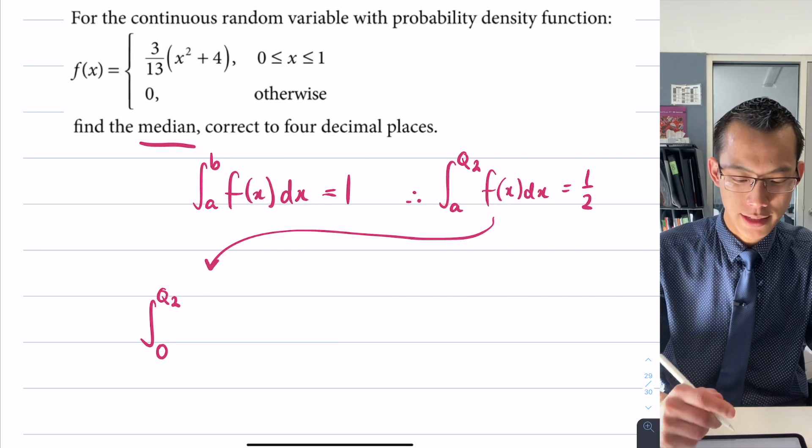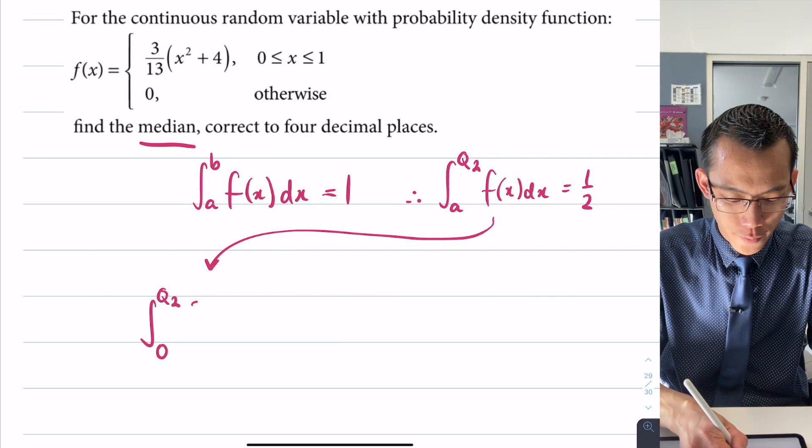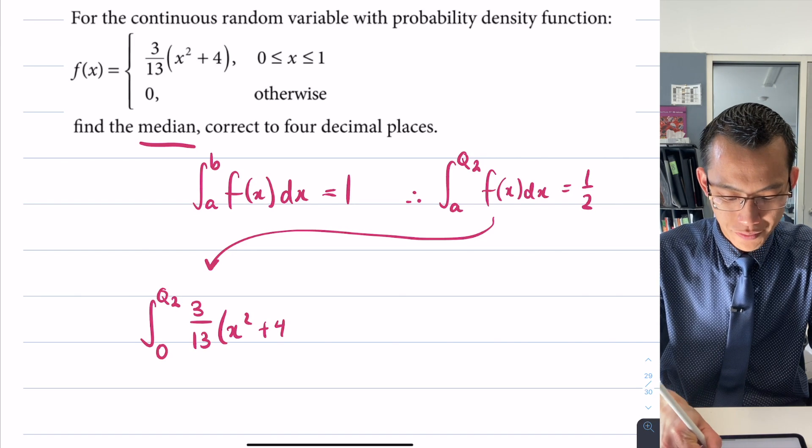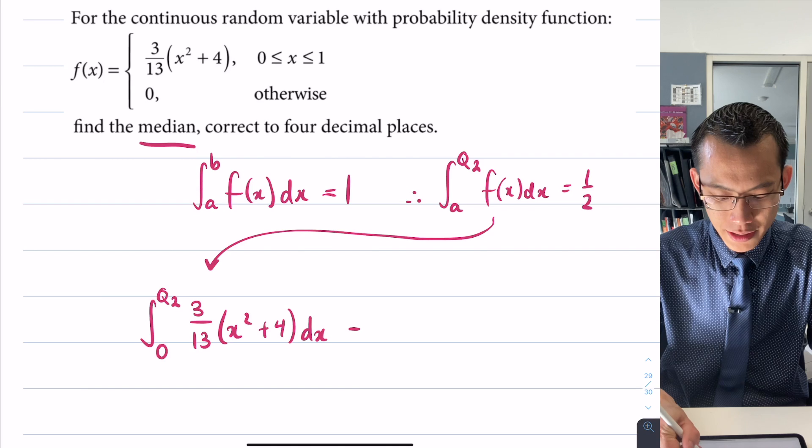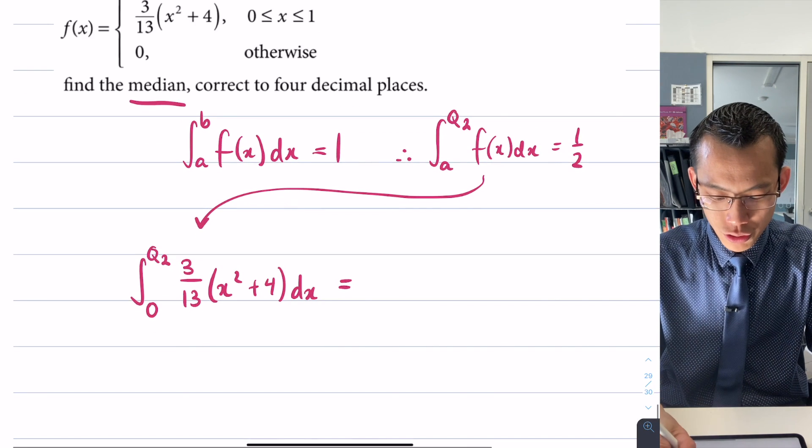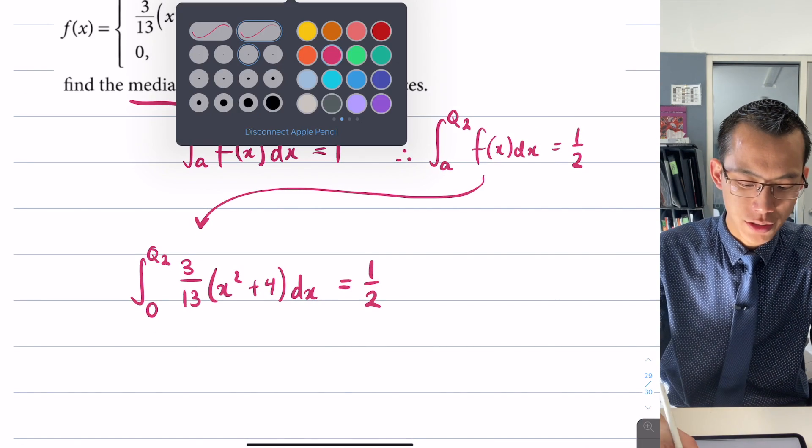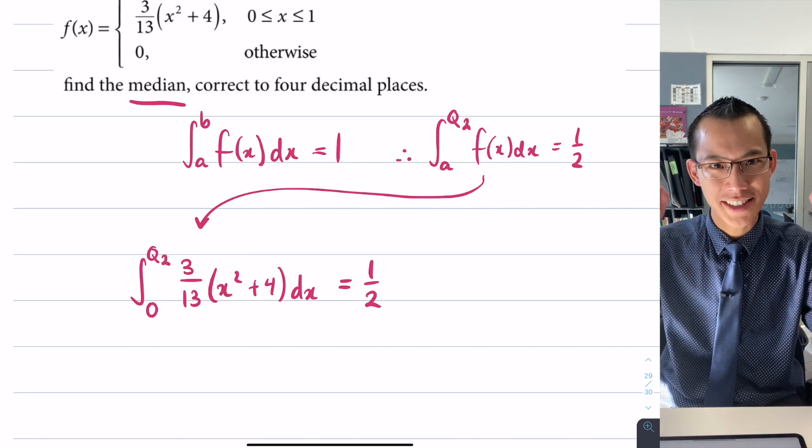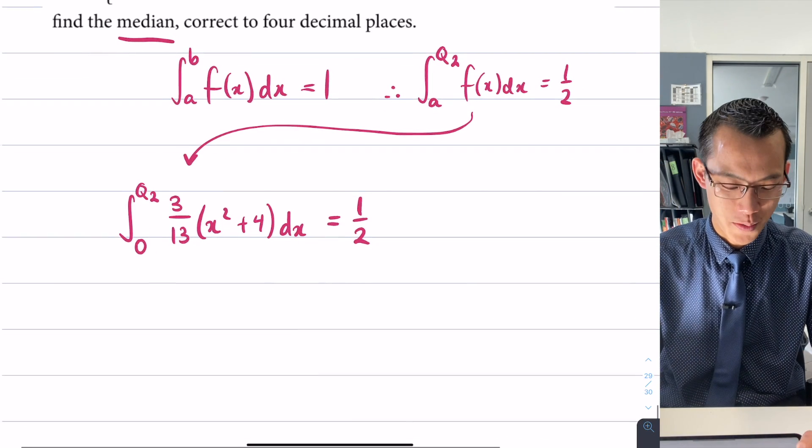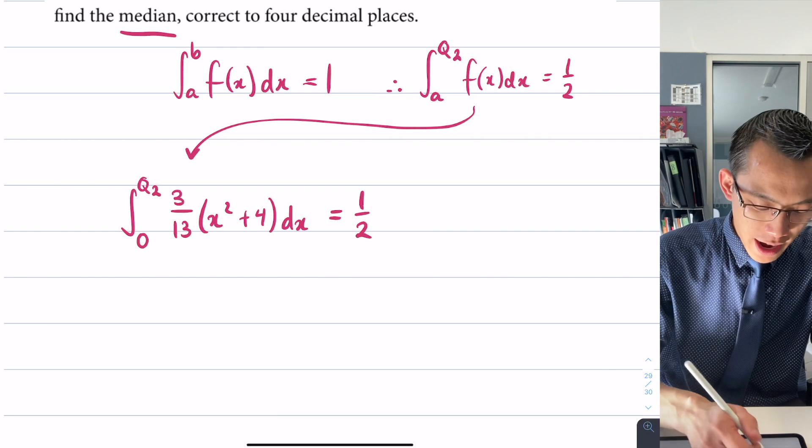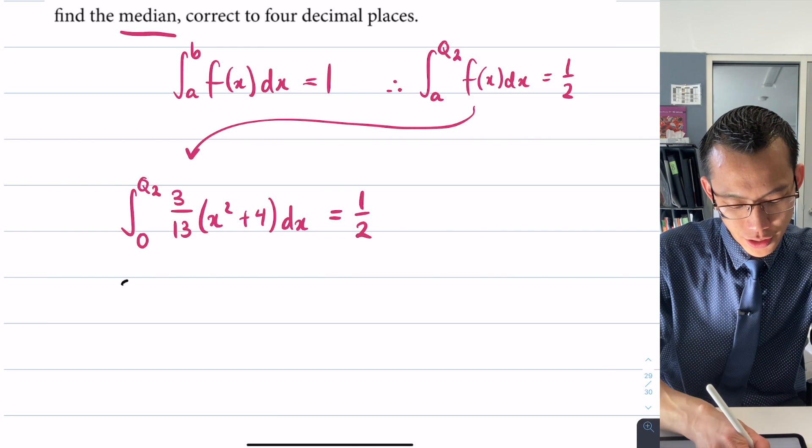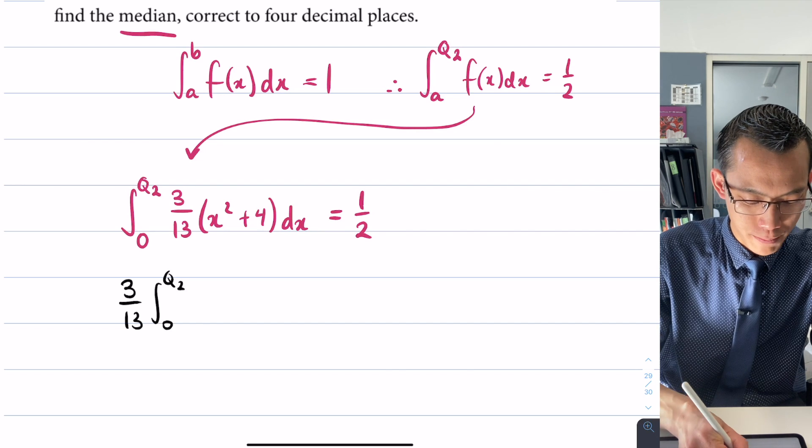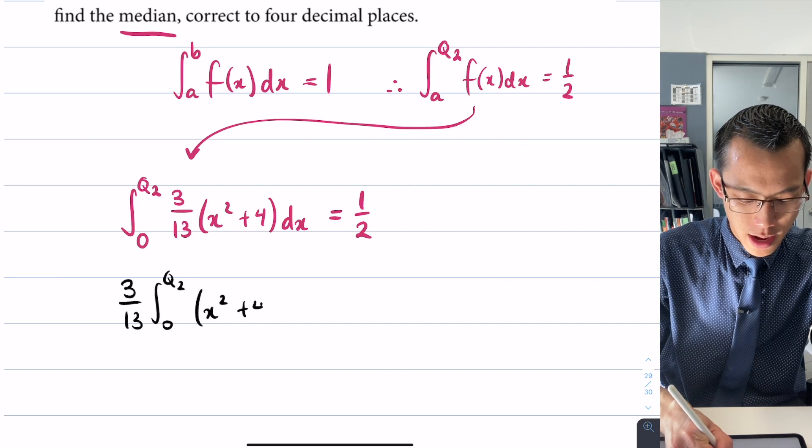My A is zero, Q2 is my unknown, so here comes my f(x): the integral from 0 to Q2 of (3/13)(x² + 4) dx equals 1/2. Here's my trajectory, I know where I'm headed now. The 3/13 I'm going to factorize out the front so I don't need to worry about it in the process of integration.